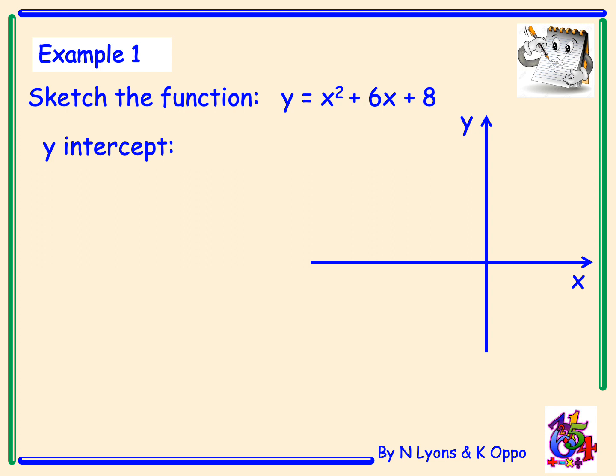First of all, we're going to write down the y-intercept. Where does this function cut the y-axis? So the function is x² + 6x + 8, and the number 8 at the end is going to tell us where it cuts the y-axis. It's going to cut it at the point (0,8).